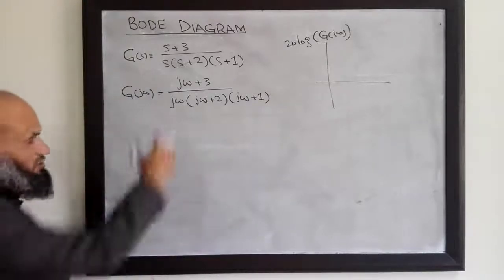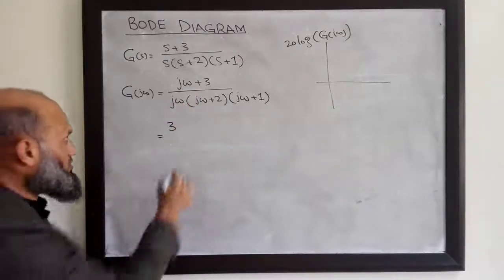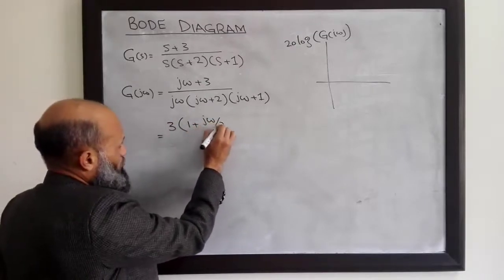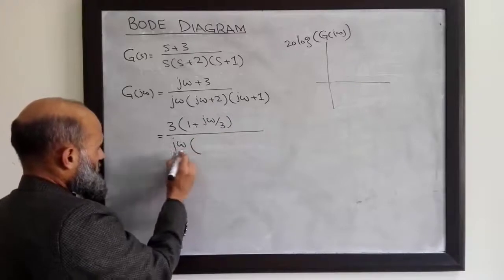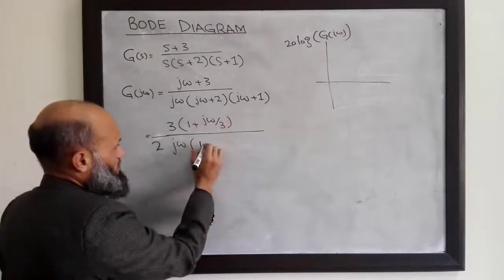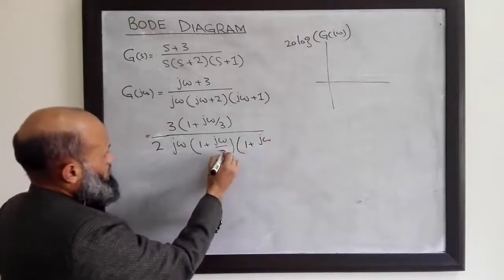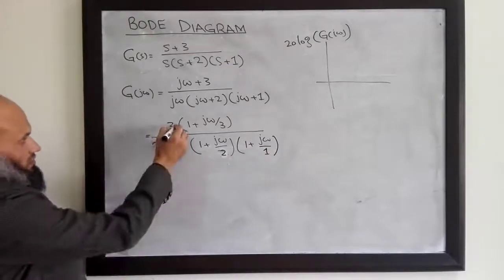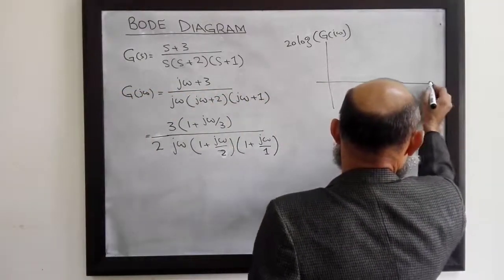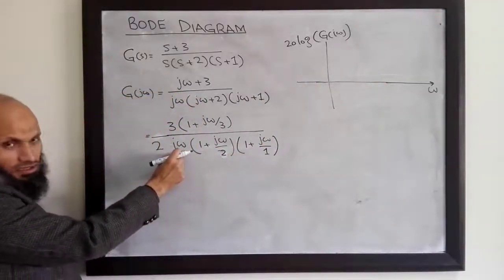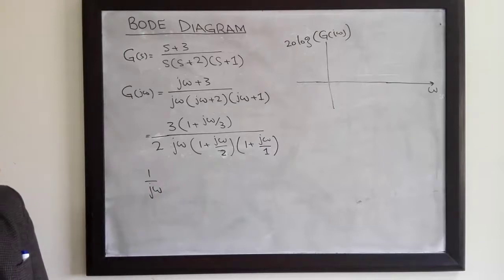We shall sketch the magnitude plot of each of the factors. For that purpose, we write it in a more convenient way. If we take 3 common from here, we have 1 plus j omega over 3. Here we can take 2 common, giving us 2 times (1 plus j omega over 1) times (1 plus j omega over 2), and here is j omega over 1. The Bode diagram for the factor 1 over j omega is a straight line with a slope of minus 20 dB per decade.